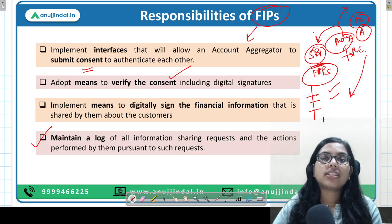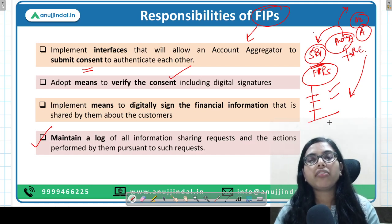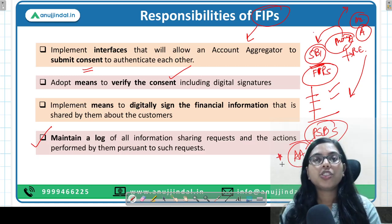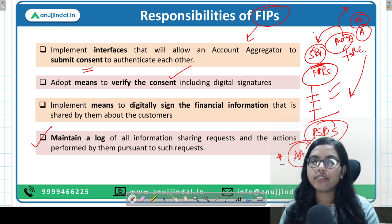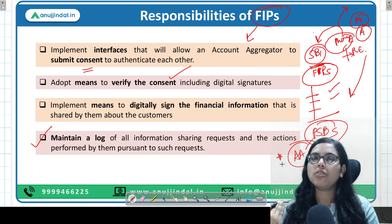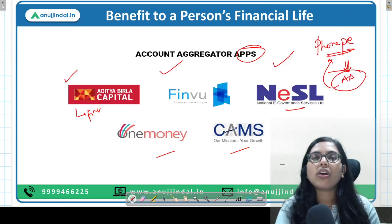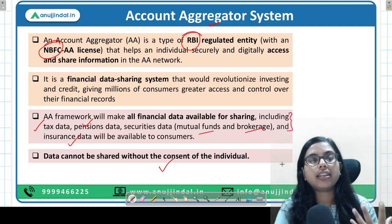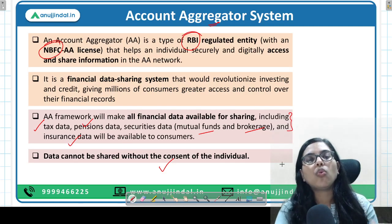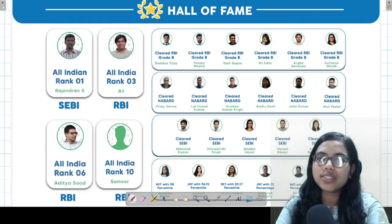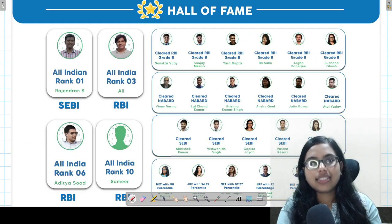Now here is a question for you: recently in the news, which was the first public sector bank to go live on the account aggregator framework? It's a very easy question. Your options are SBI, Union Bank, or Punjab National Bank — please provide your answer in the comment section. This is a very important but small topic, and it's important to understand that SEBI, the regulator for the securities and capital market, has also joined the account aggregator system. That's all for today — I hope you liked the session. In case of any doubt, write it in the chat section. Take care and bye bye.